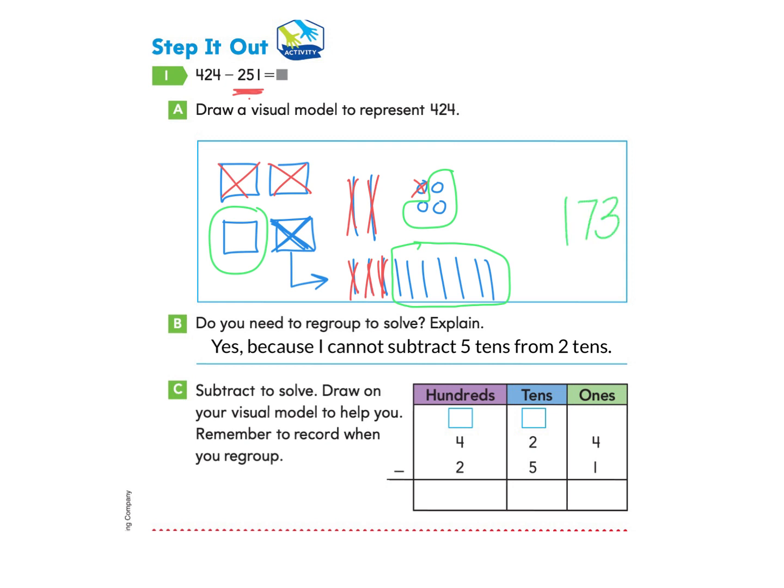Now let's record. First, we had four ones and we subtracted one. When we did that, we were left with three. So we're going to write the three right here. Then we had two tens right here. We needed to subtract five. We couldn't do that. So what we did was we took this hundred from one of the four, which is here, and we crossed one out. So we're going to cross out this four.